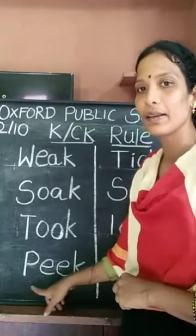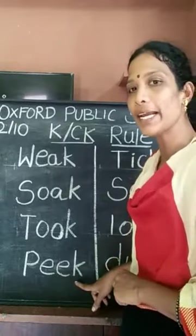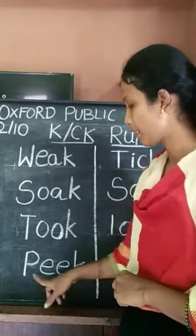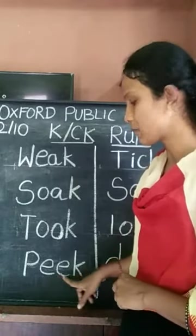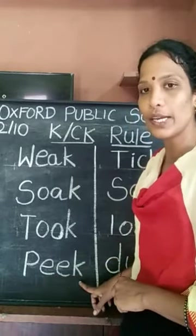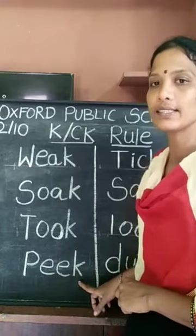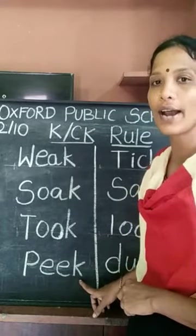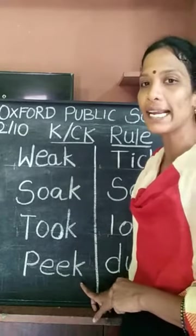Peek. Peek comes with two vowels and ends with K sound. So, write only K.